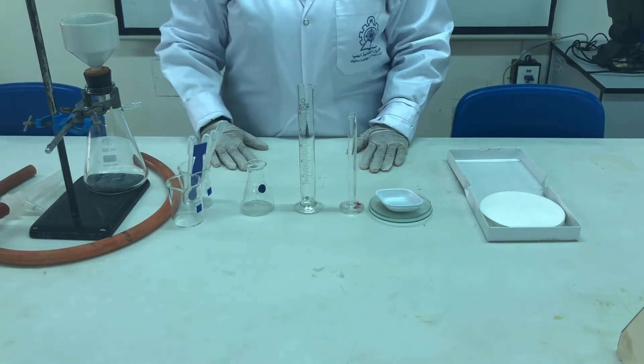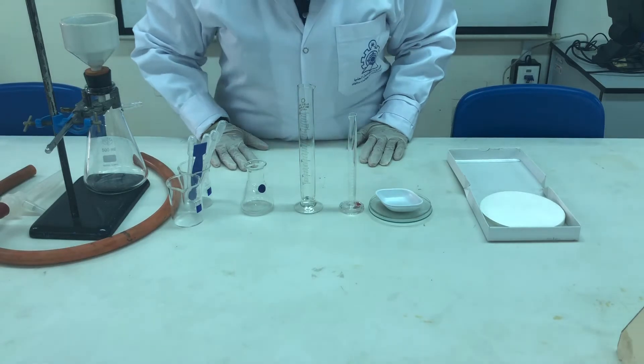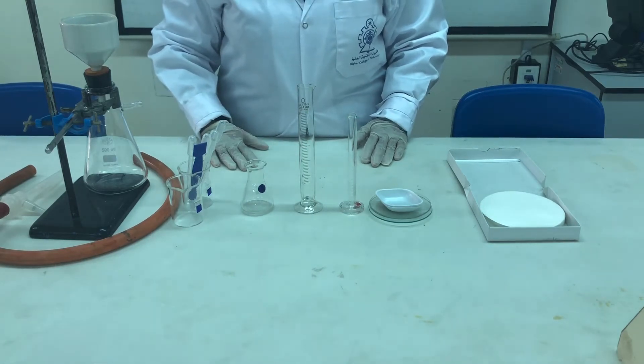Hello, good morning my students. We are going to start with Organic 2, experiment 1, that is halogenation of phenol.